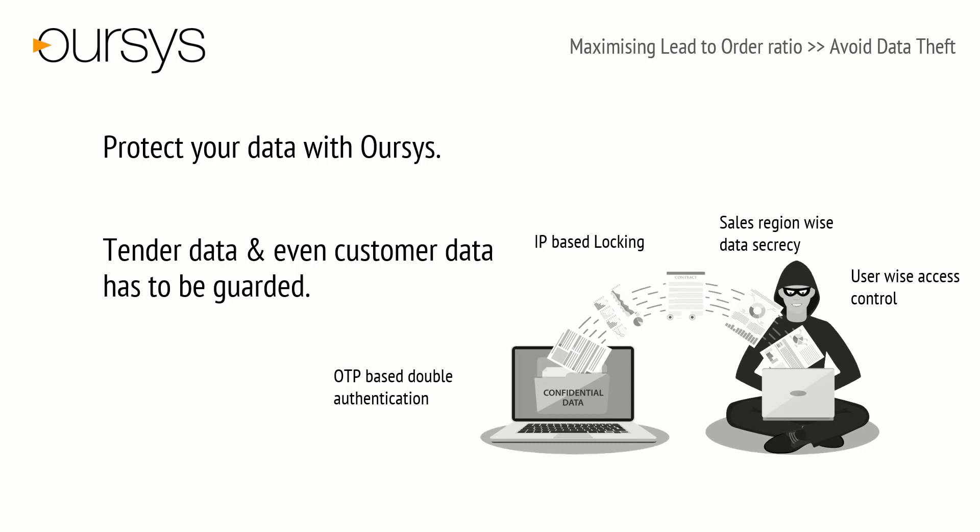Overseas system protects your data in various ways. We have OTP-based double authentication at the login level, which helps secure our passwords from threats. Overseas also provides IP-based login provision where users are automatically restricted when accessing through unauthorized networks. Sales reason-wise data secrecy makes your sales data more secure between your sales team. Overseas does not allow users to leak customer information from the system.